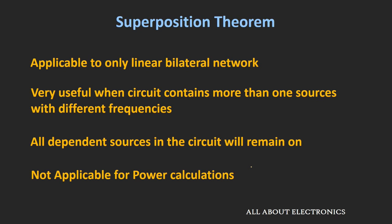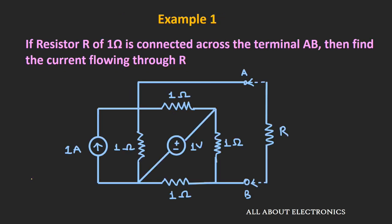Let us now see examples based on the superposition theorem. In the first example, we have an electrical circuit and we need to find the current flowing through the 1-ohm resistor. We will solve this using the superposition theorem — considering only one particular independent source at a time and finding the current through resistor R due to that source.